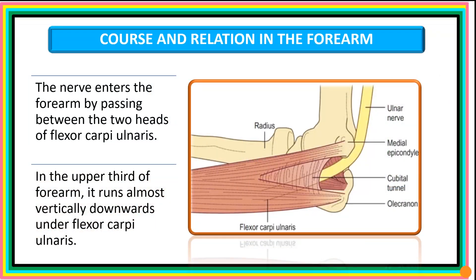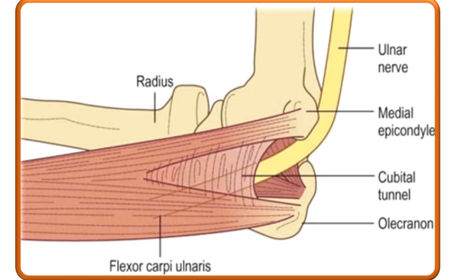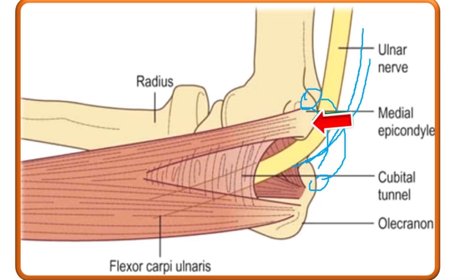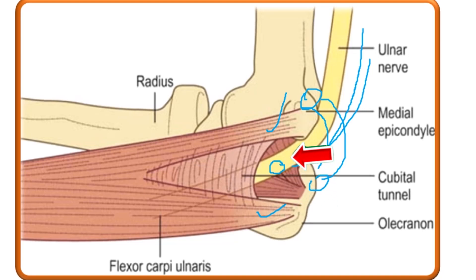In the forearm, the course of the ulnar nerve varies in the upper third and the lower two thirds. In the upper third, the nerve enters the forearm passing between the olecranon process and the medial epicondyle at the cubital tunnel. It then passes between the humeral head and the ulnar head of flexor carpi ulnaris. In this upper third it runs almost vertically downwards under the cover of flexor carpi ulnaris.